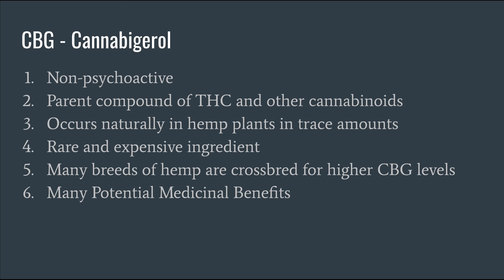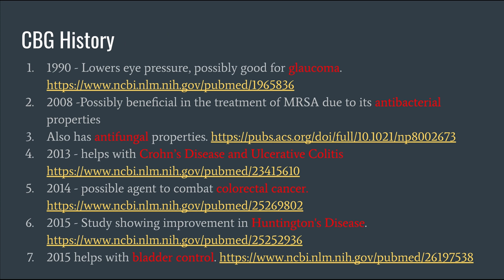Moving into CBG — cannabigerol — CBD is actually made from CBG. CBG is a precursor to CBD, THC, and other cannabinoids. It's non-psychoactive: it does not convert into THC in the body, only in the plant. It occurs naturally in hemp plants in very trace amounts because it differentiates into other cannabinoids, making it rare and expensive to harvest. Many hemp strains today are bred for higher CBG content due to emerging research.